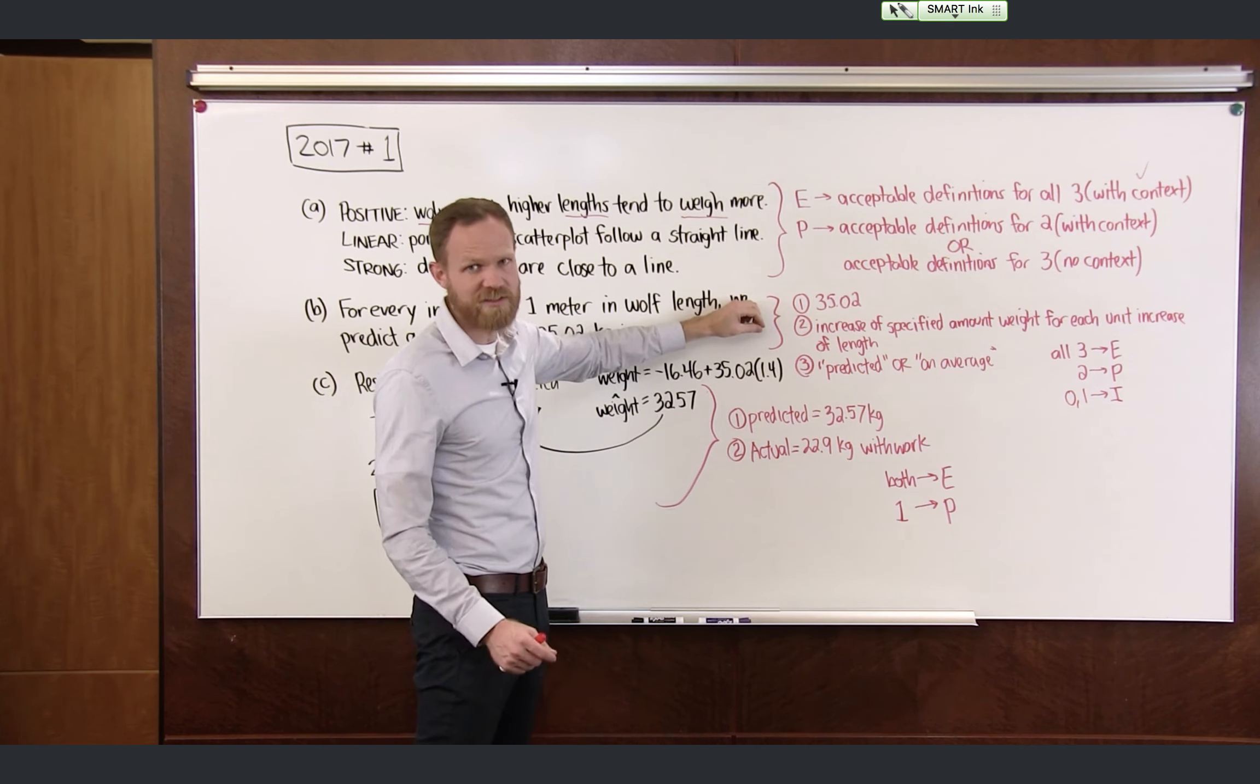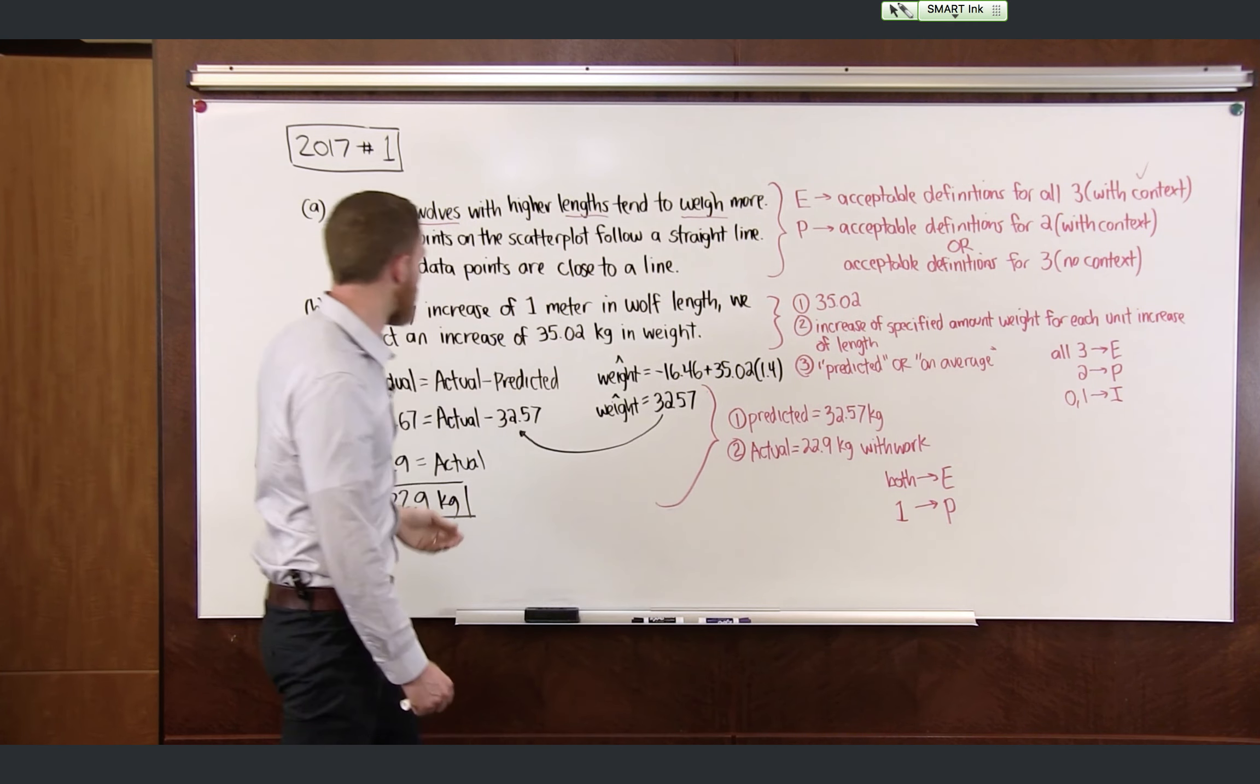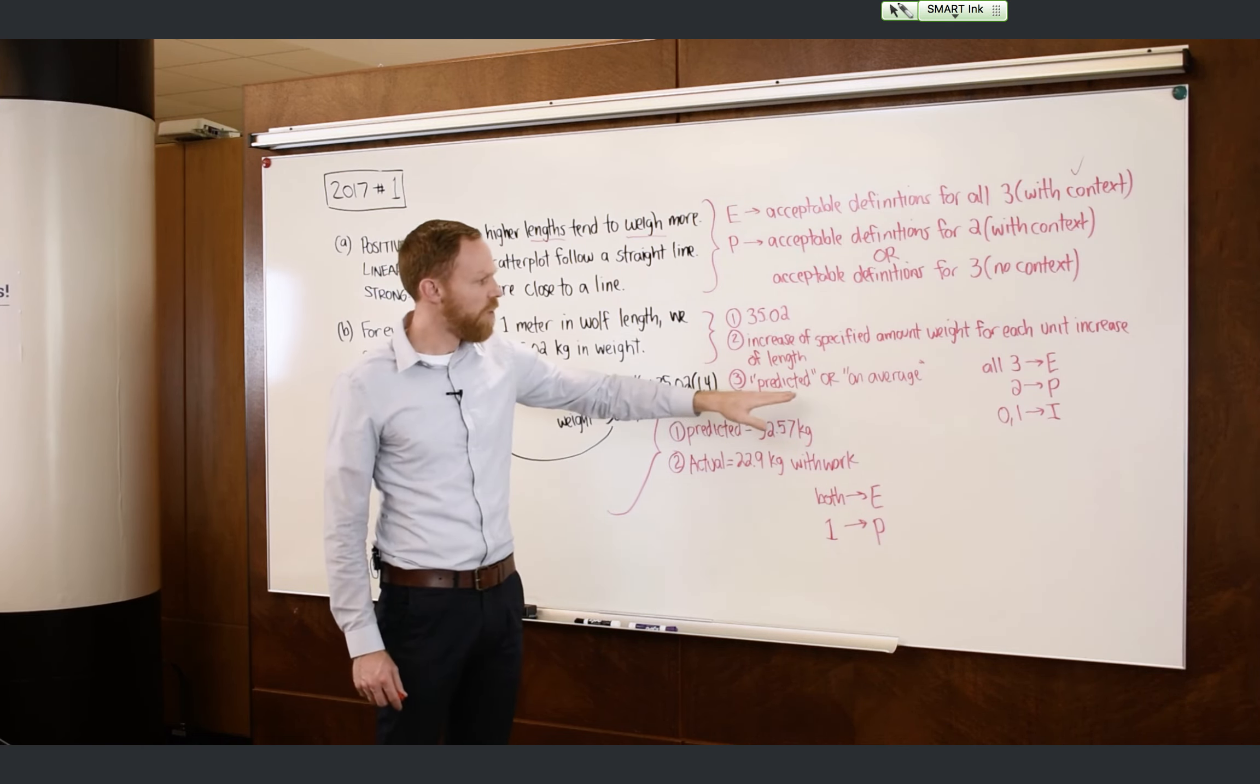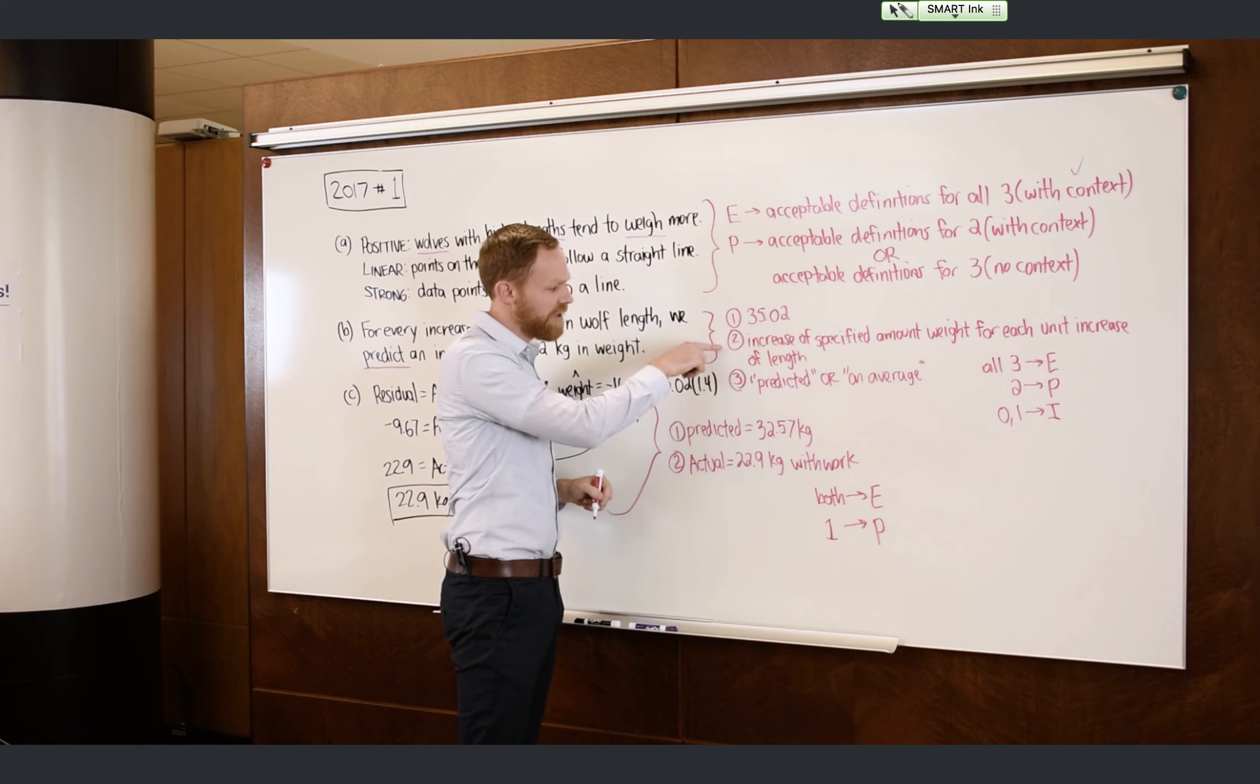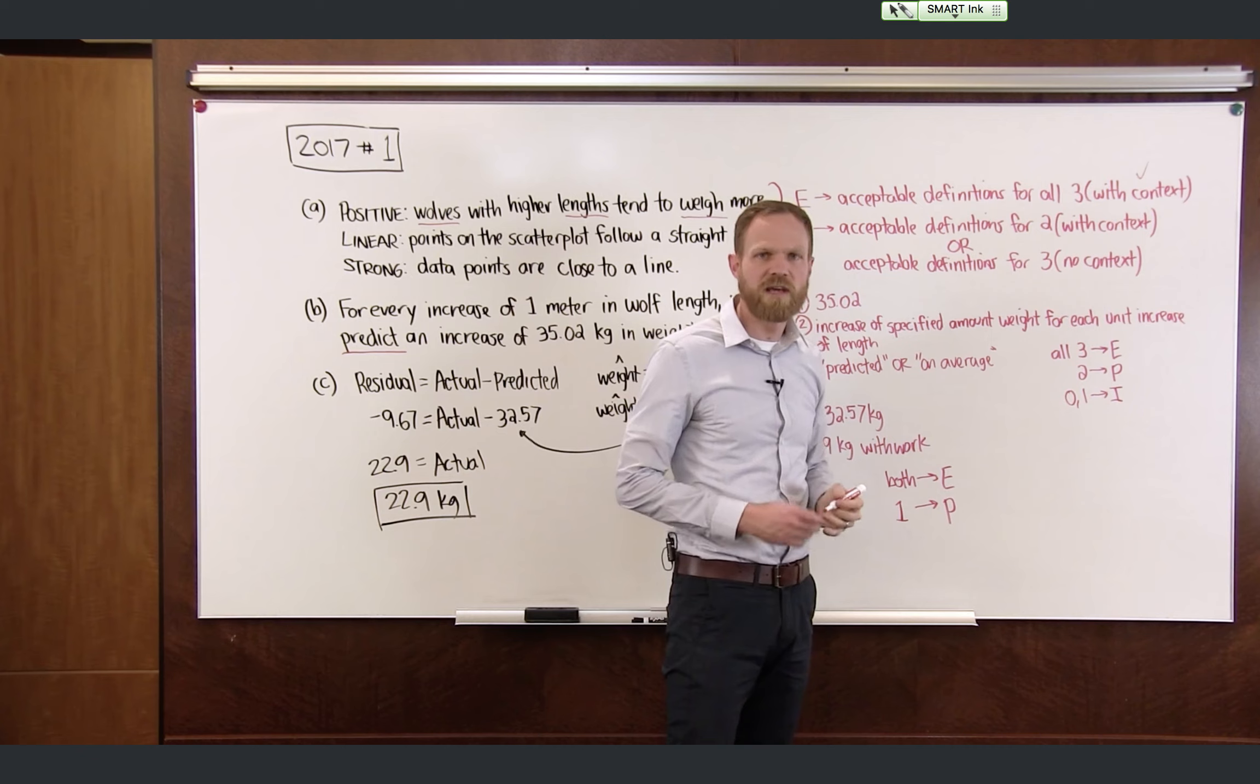Now let's take a look at part B. There are three components that are necessary for full credit here. First, you have to correctly identify the slope of the line as 35.02. Secondly, in your interpretation, you have to say that an increase of a specified amount of weight for each unit increase of length. And for us, we've specified an increase of 35.02 kilograms for every one meter increase in the length. And then the third thing is you have to have used the word predicted or the words on average. So for us, we put that right here. Okay, we call that non-deterministic language. So one important idea here is if you missed component one, you can still get credit for components two and three, even if you're using the incorrect value that you used for part one. So if you got all three of those components, give yourself E for essentially correct. If you got two of those three components, you get partially correct. And then anything less than that would be an I for incorrect.